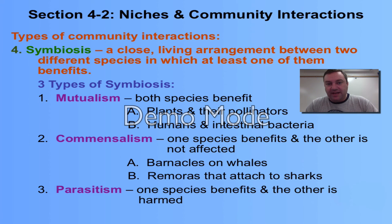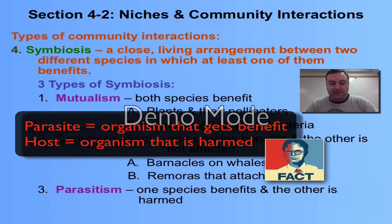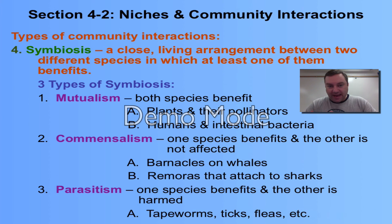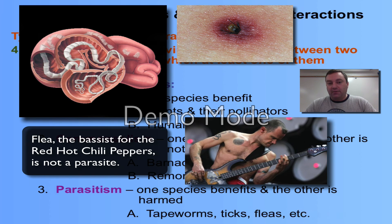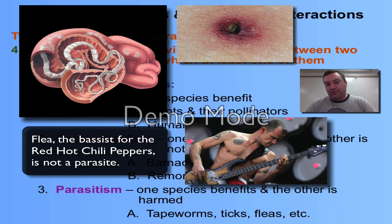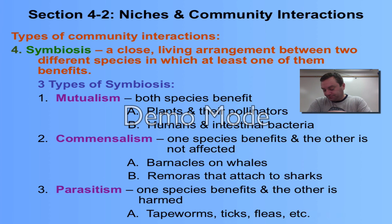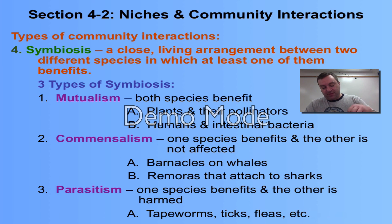The third type of symbiosis is parasitism. In parasitism, one species benefits and the other is harmed. Think of tapeworms, ticks, fleas, mosquitoes, etc. — they are essentially feeding off the other organism, so they have a close relationship but one is being harmed. For example, when a mosquito gets on a human, it feeds off your blood. Ticks and fleas do the same thing with animals, and tapeworms will embed themselves in your intestine and take some of your nutrients away.